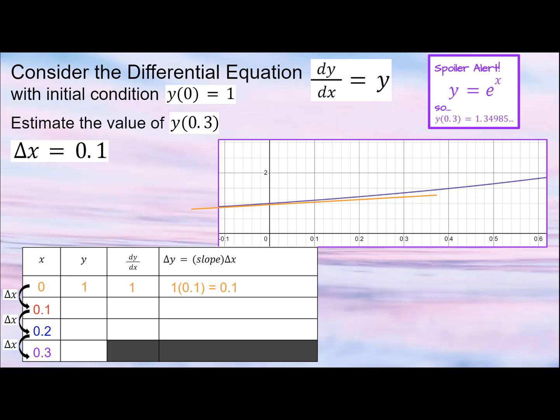Our previous y was 1, so 1 plus 0.1 is 1.1. Now repeat the process. The slope is y, so 1.1.